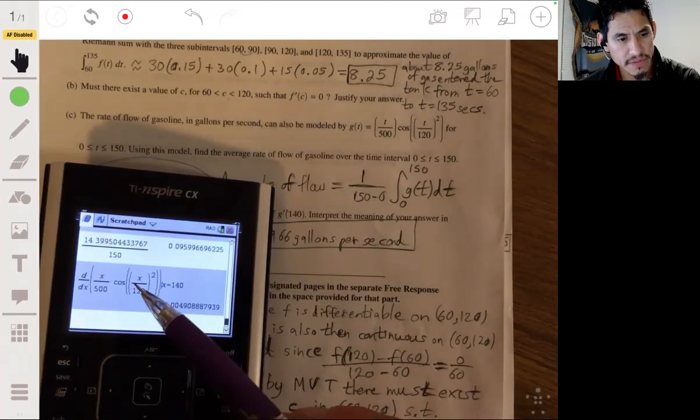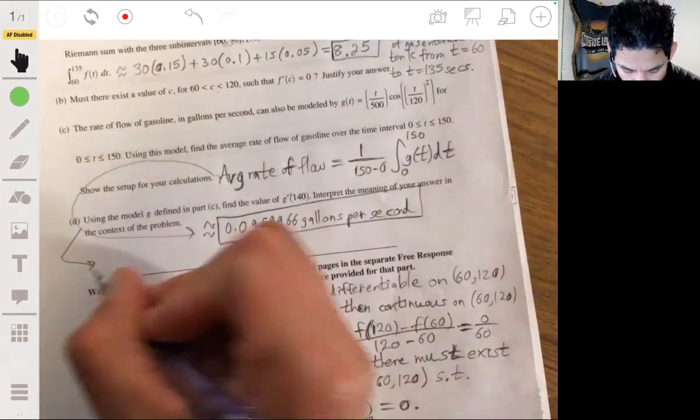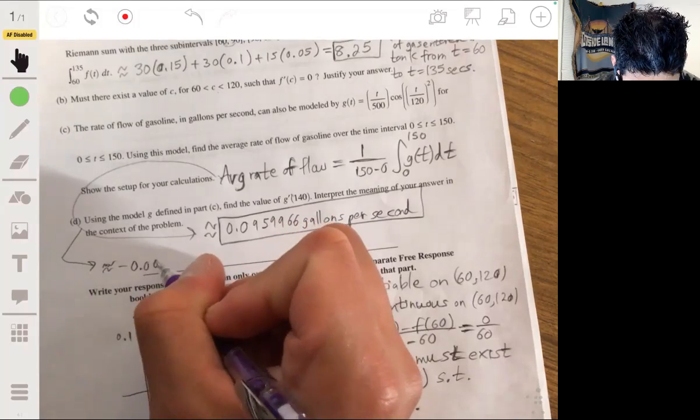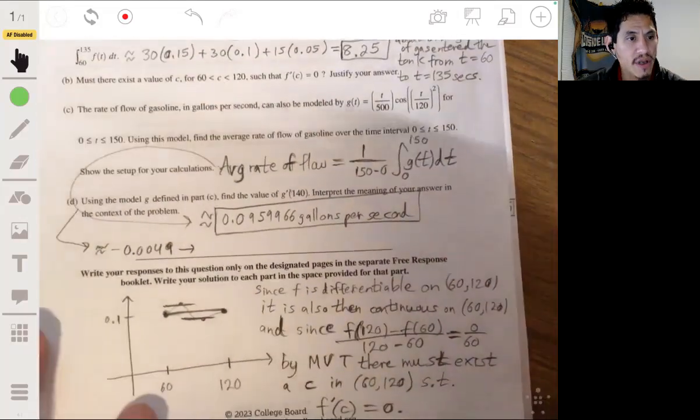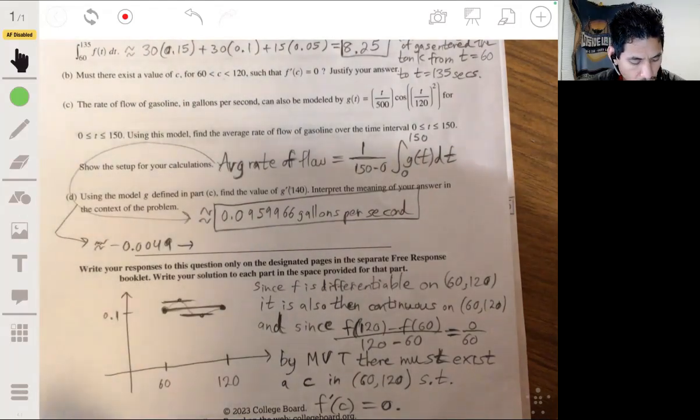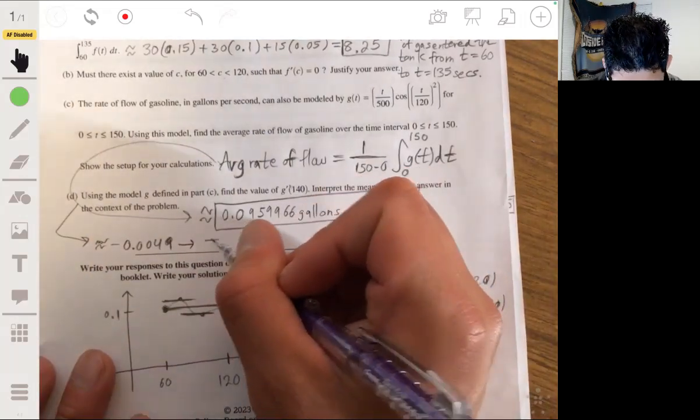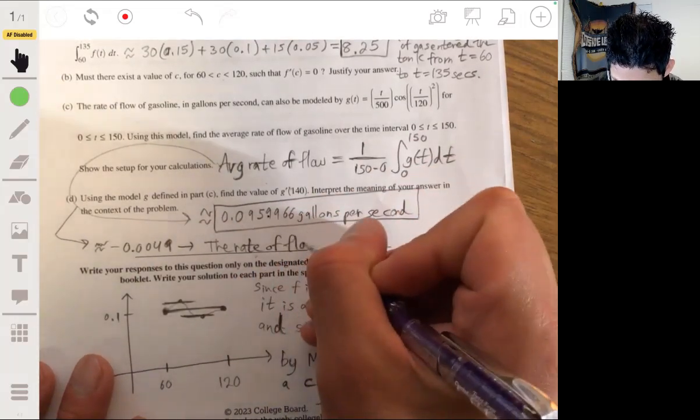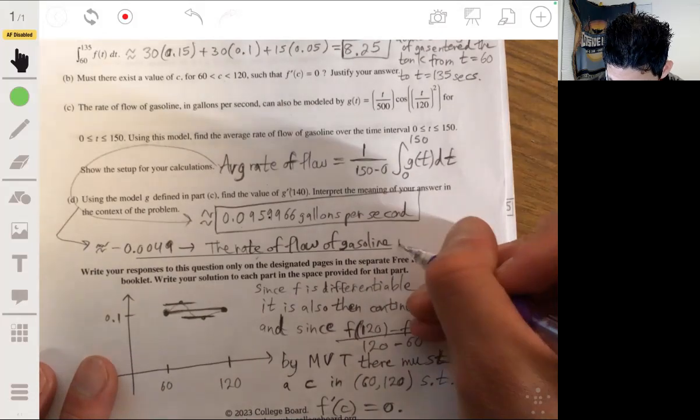And you're going to have to make sure you write the units in gallons per second per second. So I already did my calculator for that specific time at 140. So I found G'(140). So I found the derivative of that function at 140 to be negative 0.0049.